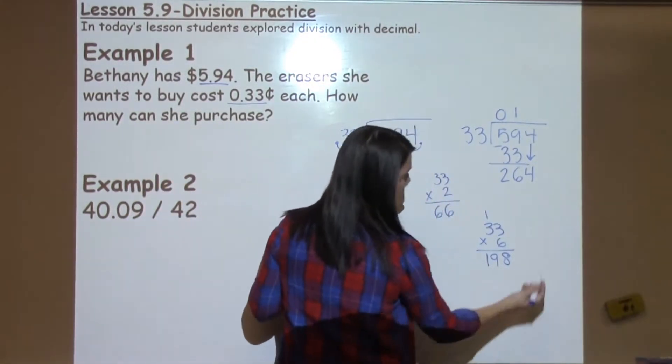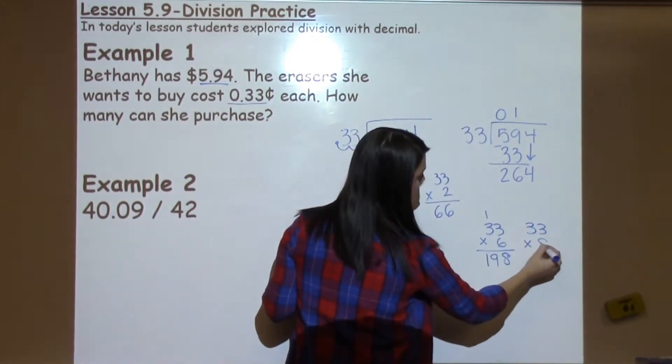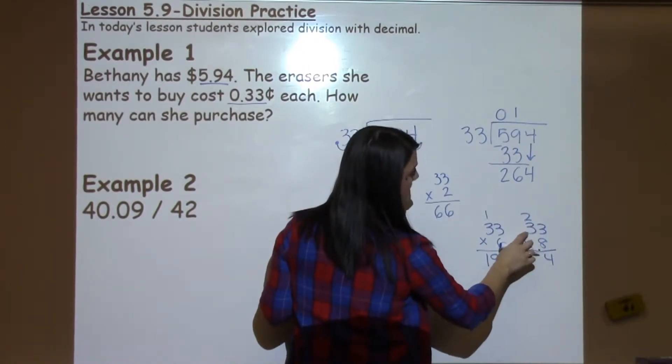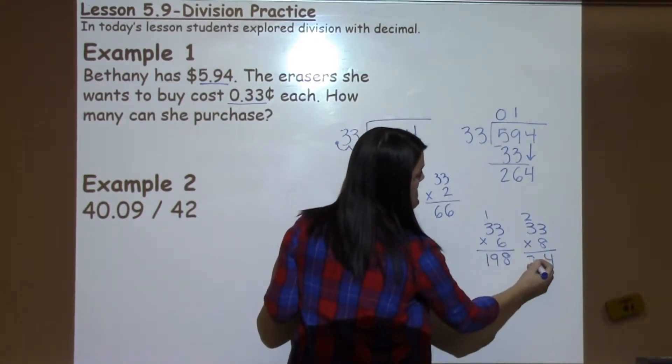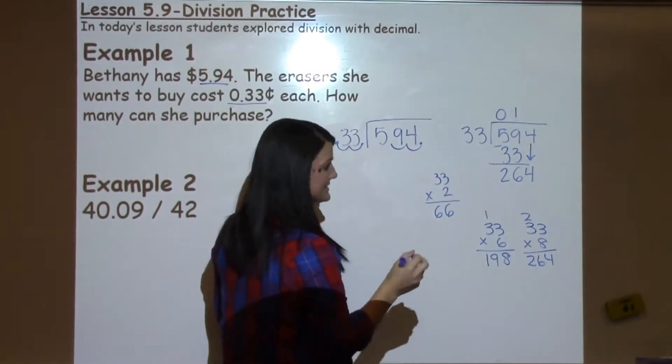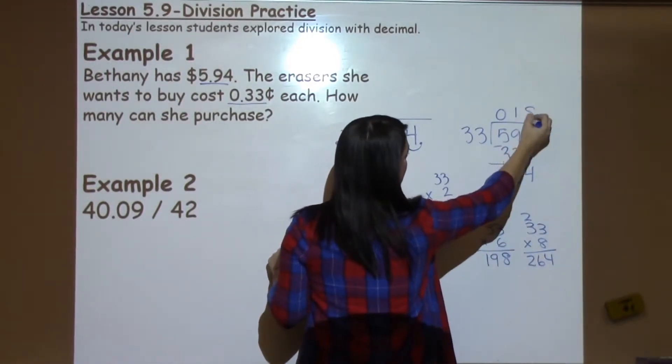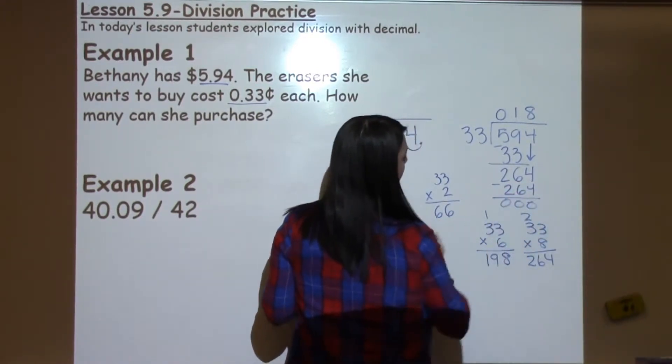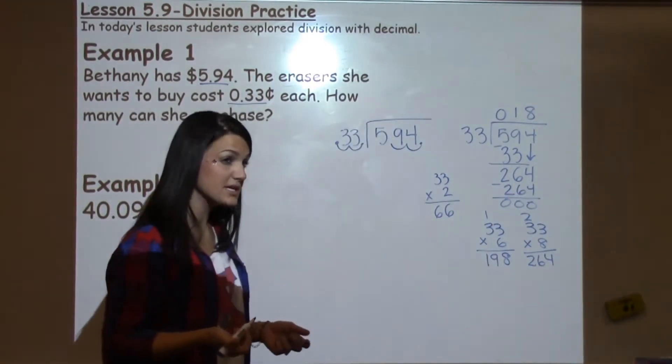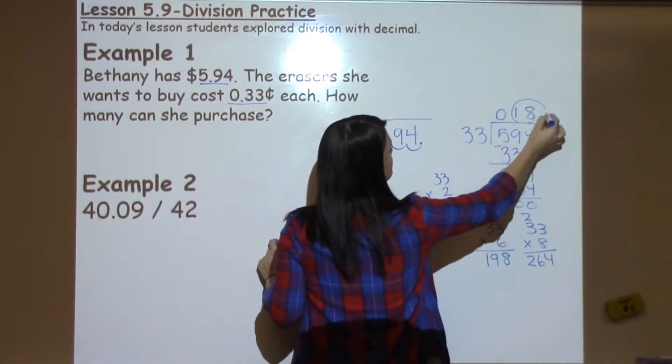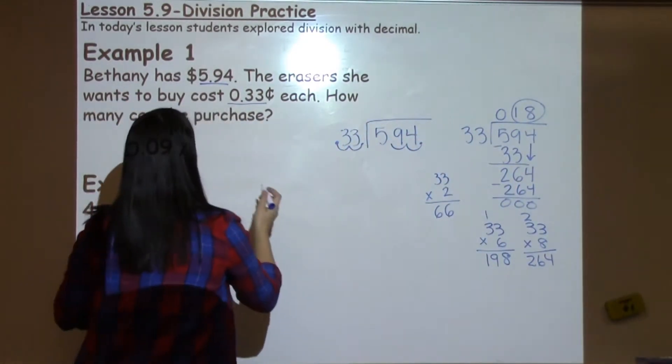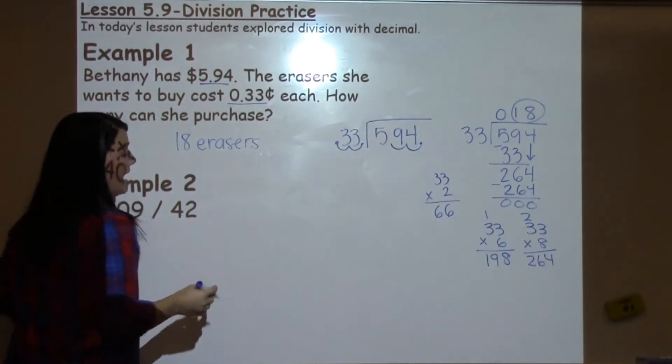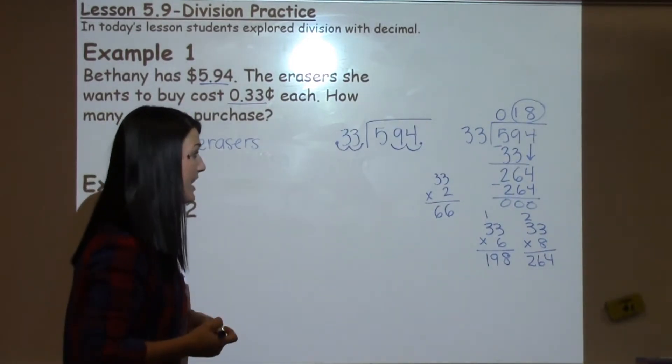Students might jump to $33 times $8. $8 times $3 is $24. $8 times $3 plus $2 is $26. That gives me exactly what I'm looking for, that $33 times $8 got me exactly $264. When I subtract, I have $0. So there's no remainder. And the answer on the top tells me that Bethany would be able to buy 18 erasers. 18 erasers exactly. She wouldn't have any money left over.